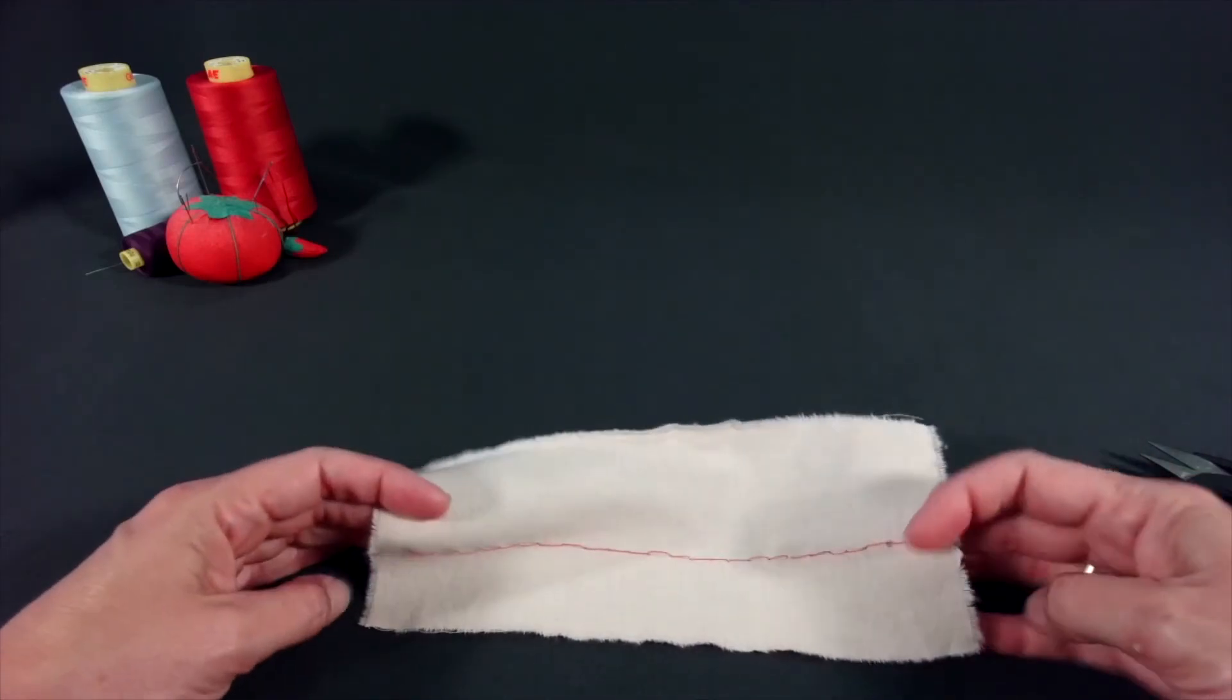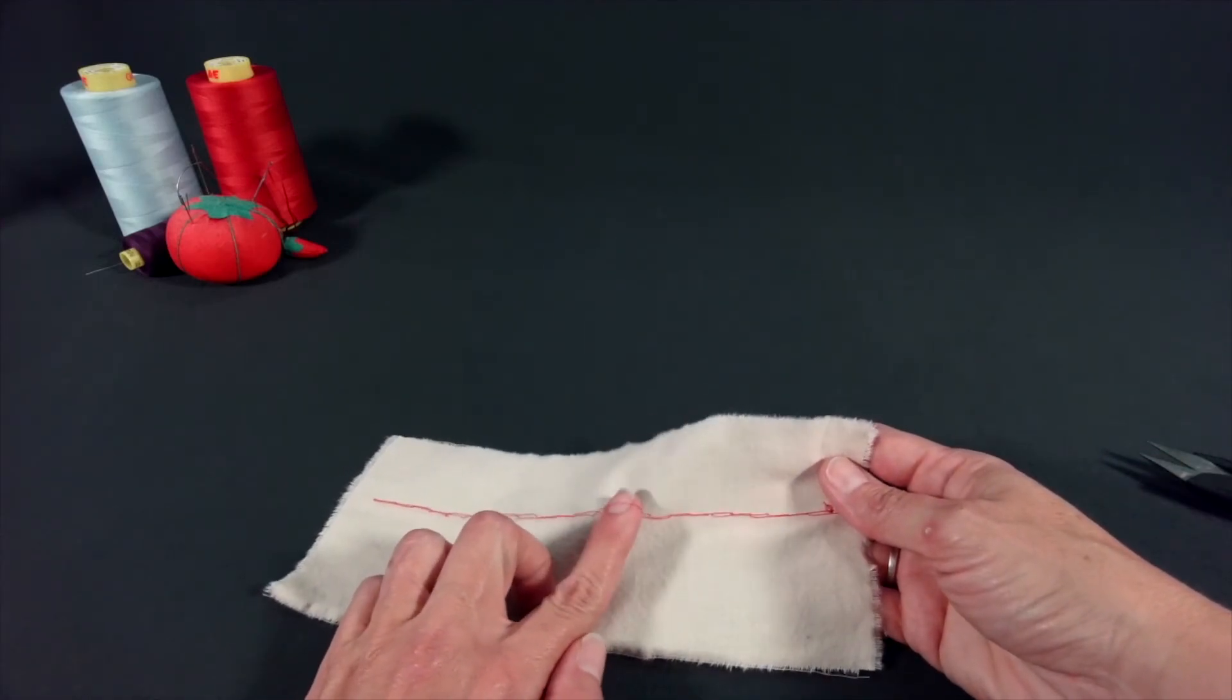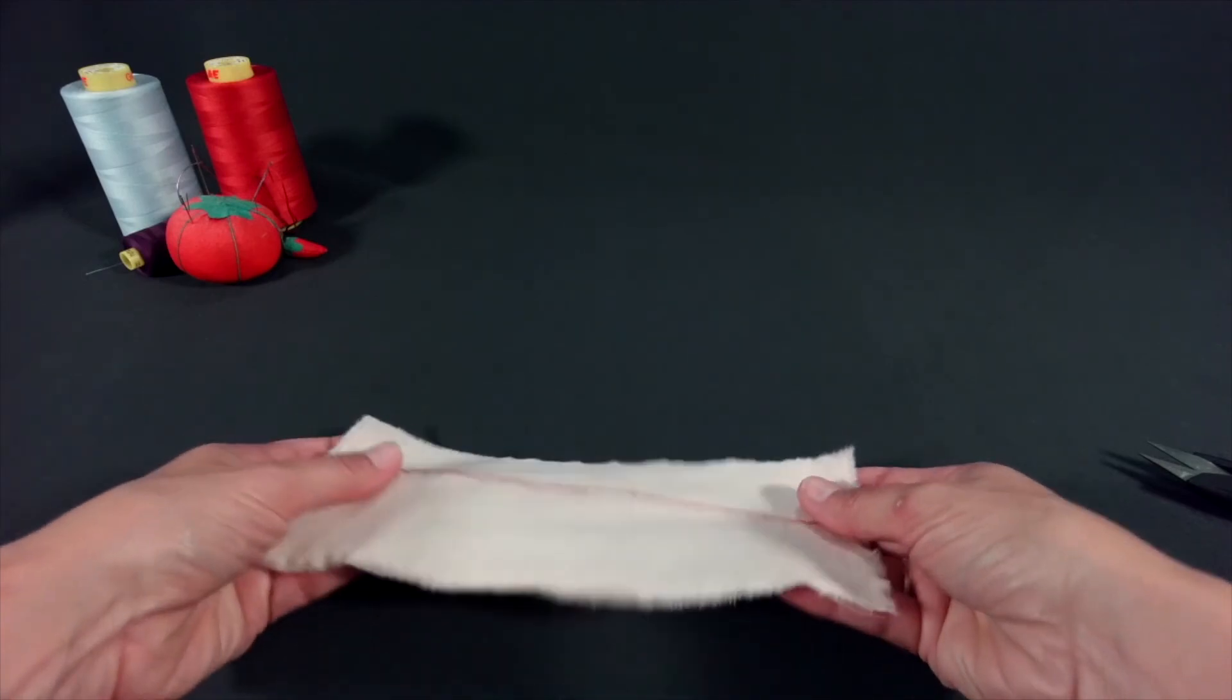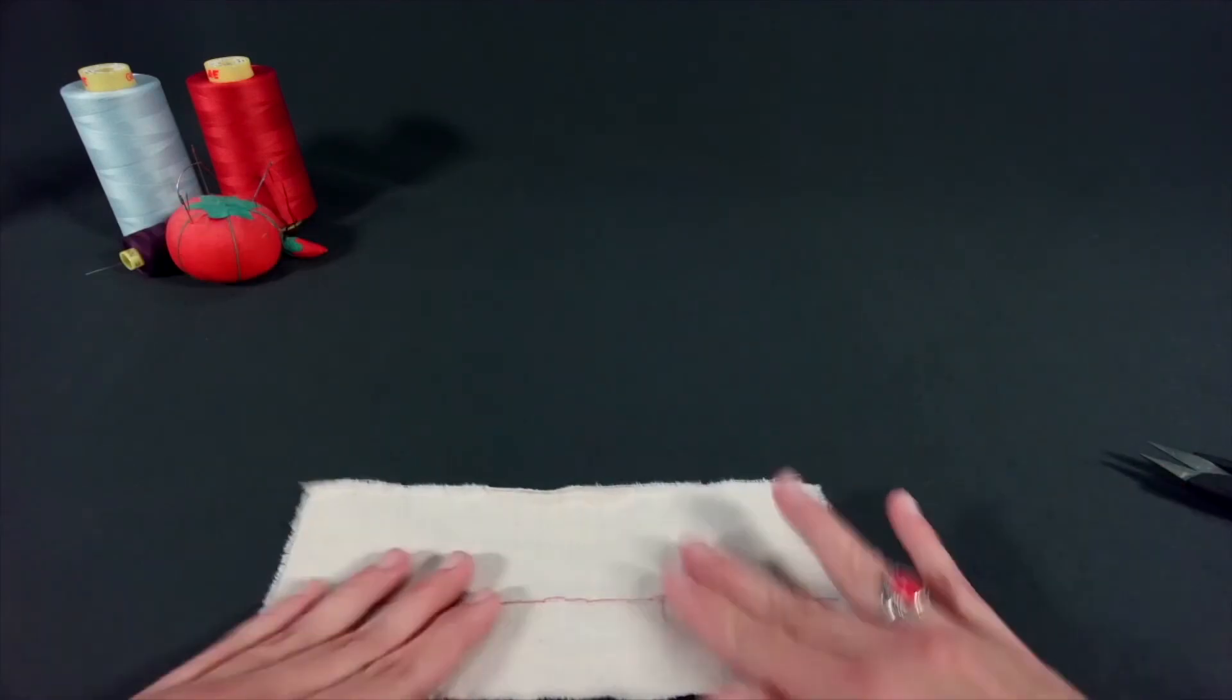I am going to check the reverse side. It looks like my tension was off and I have a thread loop. This is why it is good to check your work often. This ensures you can catch mistakes before they happen.